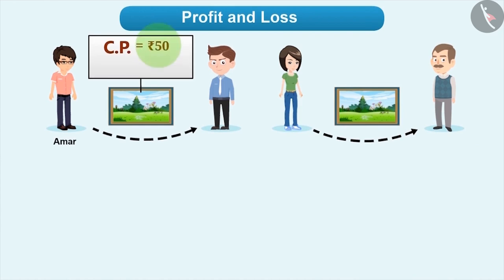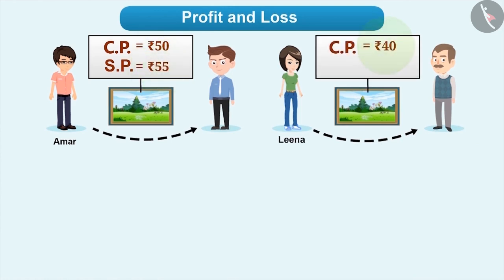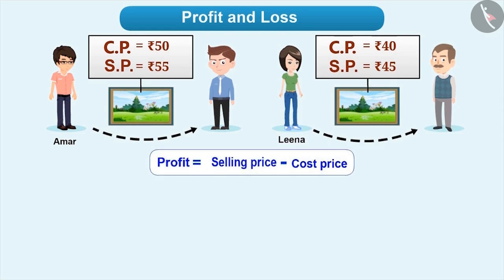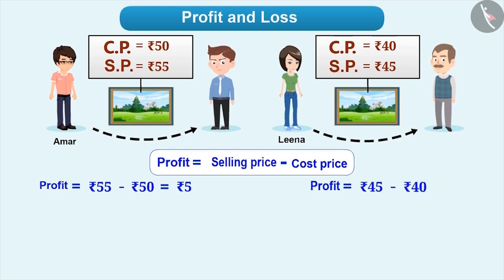Let us suppose Amar purchased a photo frame for 50 rupees and sold it to his friend for 55. Leena also purchased a similar photo frame for 40 rupees and sold it to another person for 45. So tell me who gets more profit? Profit of Amar is equal to selling price minus cost price, which is equal to 55 minus 50, which is 5 rupees. Similarly, for Leena, selling price minus cost price is equal to 45 minus 40, which is again 5 rupees. Can we say that both get equal profit?